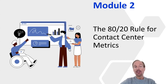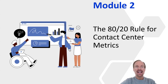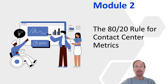Today, in the second module of our course, we're going to discuss the 80-20 rule for contact center metrics. As the name implies, you can get 80% of the value from just 20% of the metrics. This rule is also known as the Pareto Principle. It's important because it allows you to leverage just a handful of metrics to effectively manage your contact center.